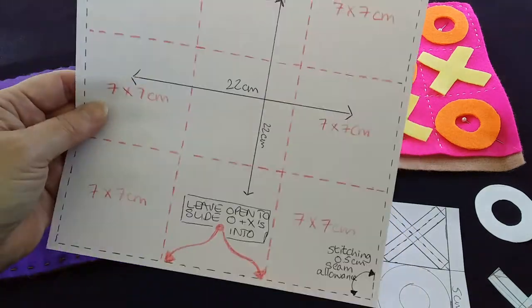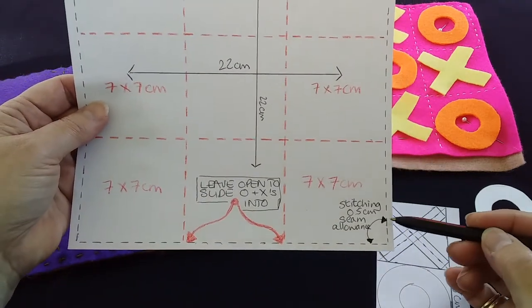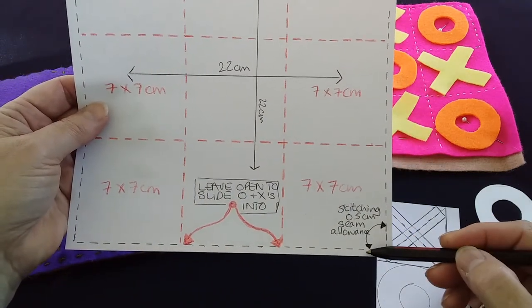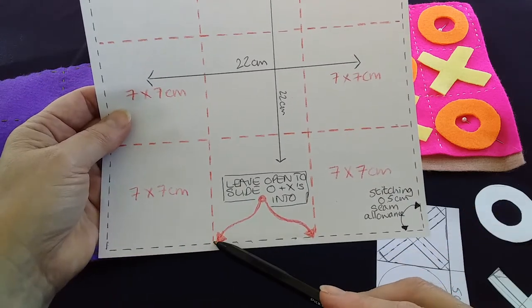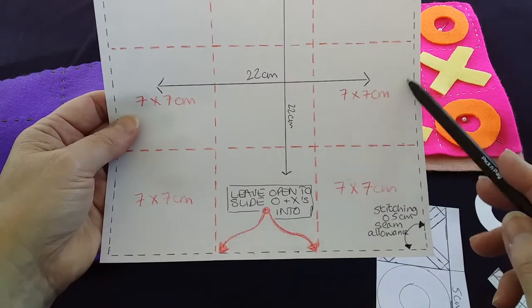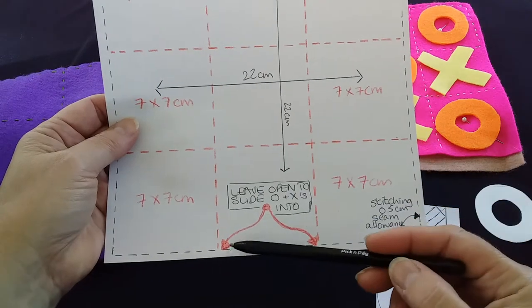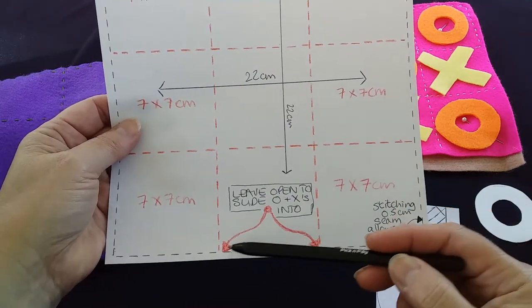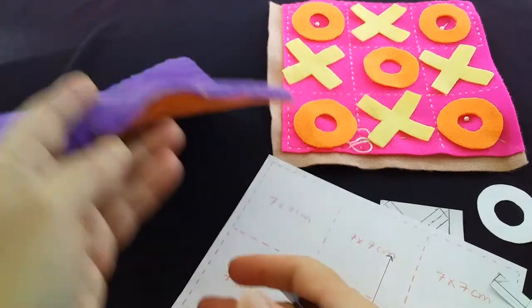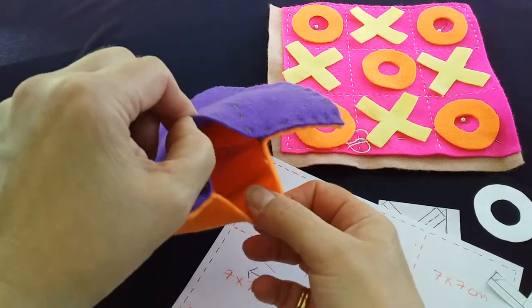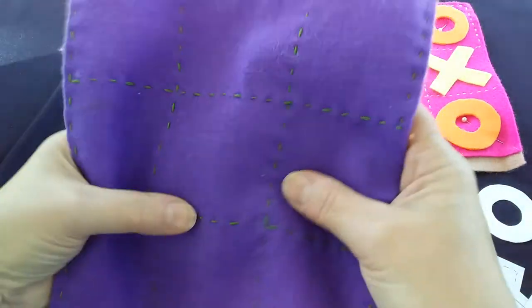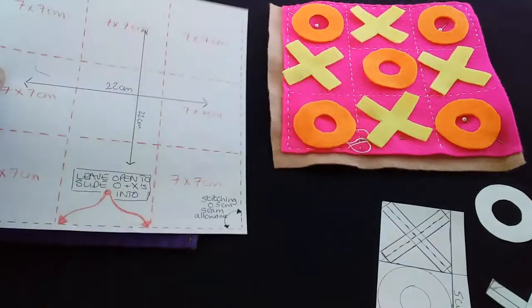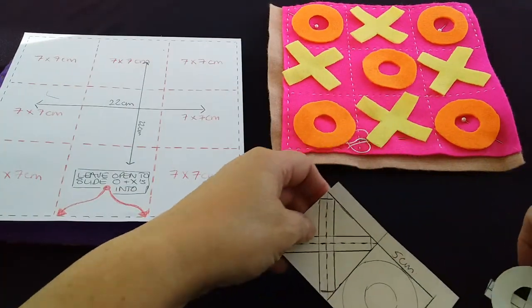This is your seam allowance, half a centimeter all around. Then just remember that in one side, it could be in any of these sides, but the center one you just want to leave open. Don't stitch across here because that will be your little pocket where you're going to slide your pieces. I normally cut a few extra pieces because knowing little people, they often lose them.